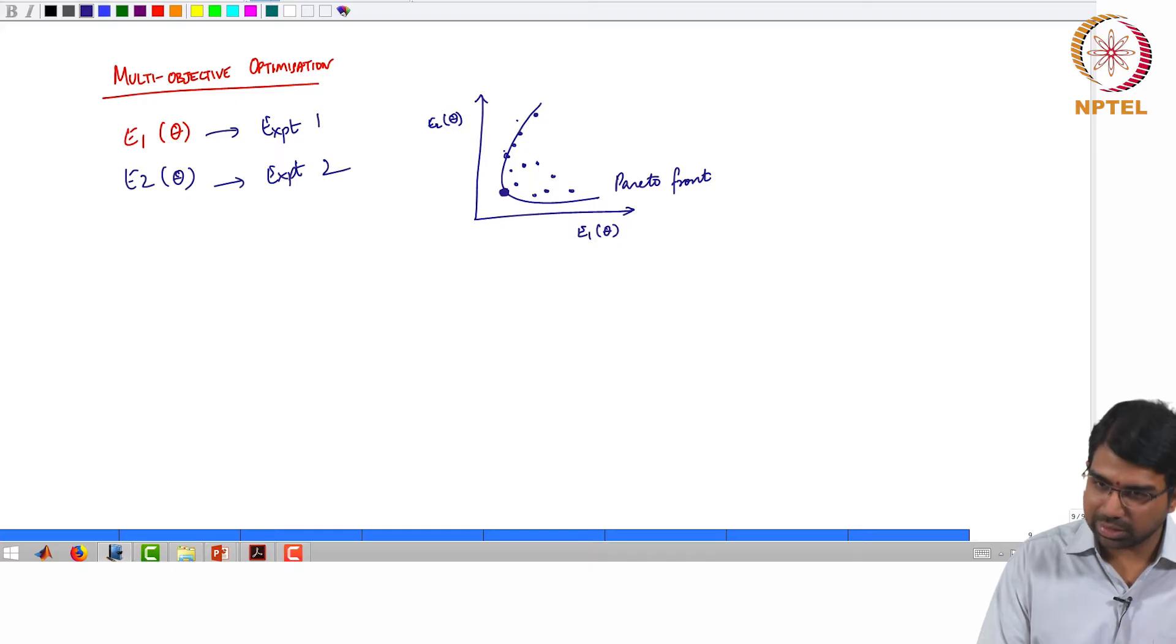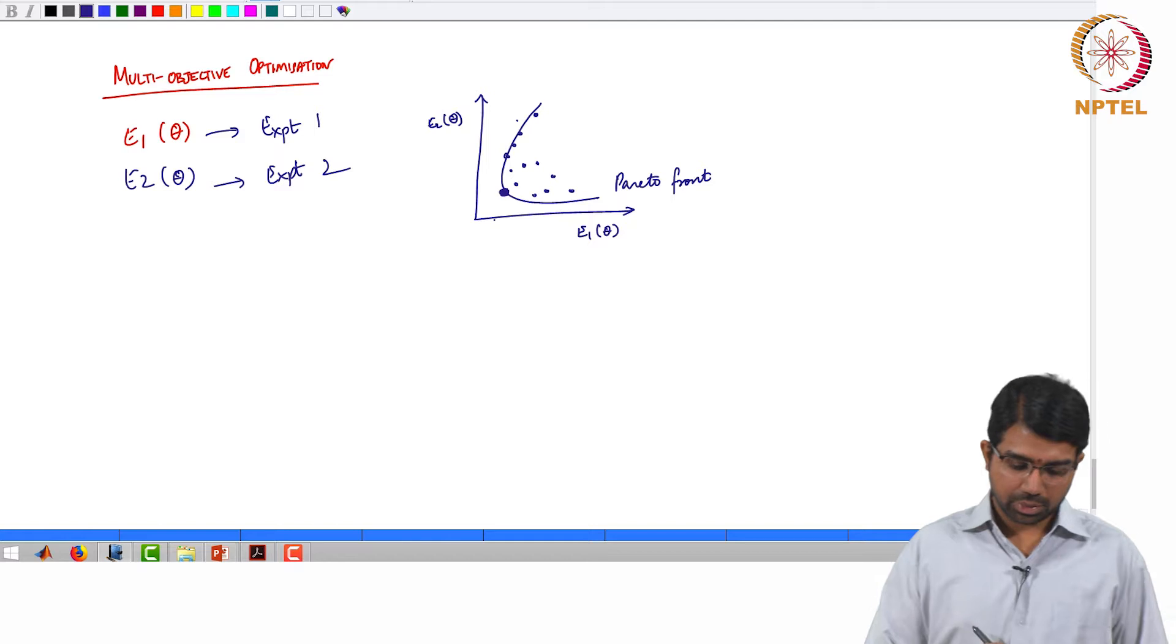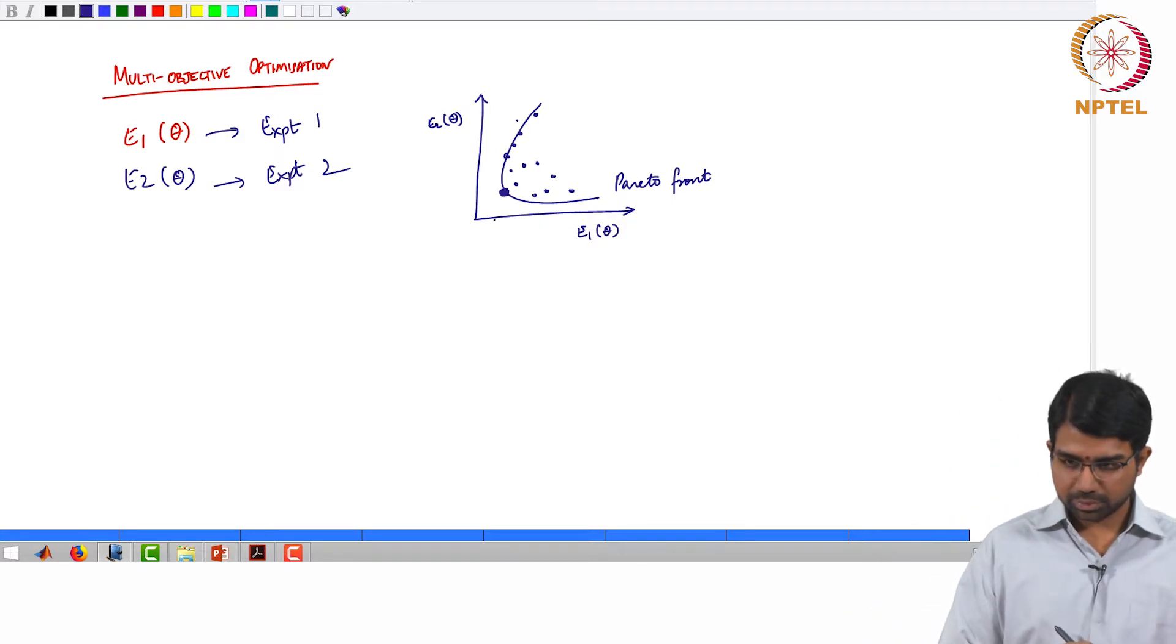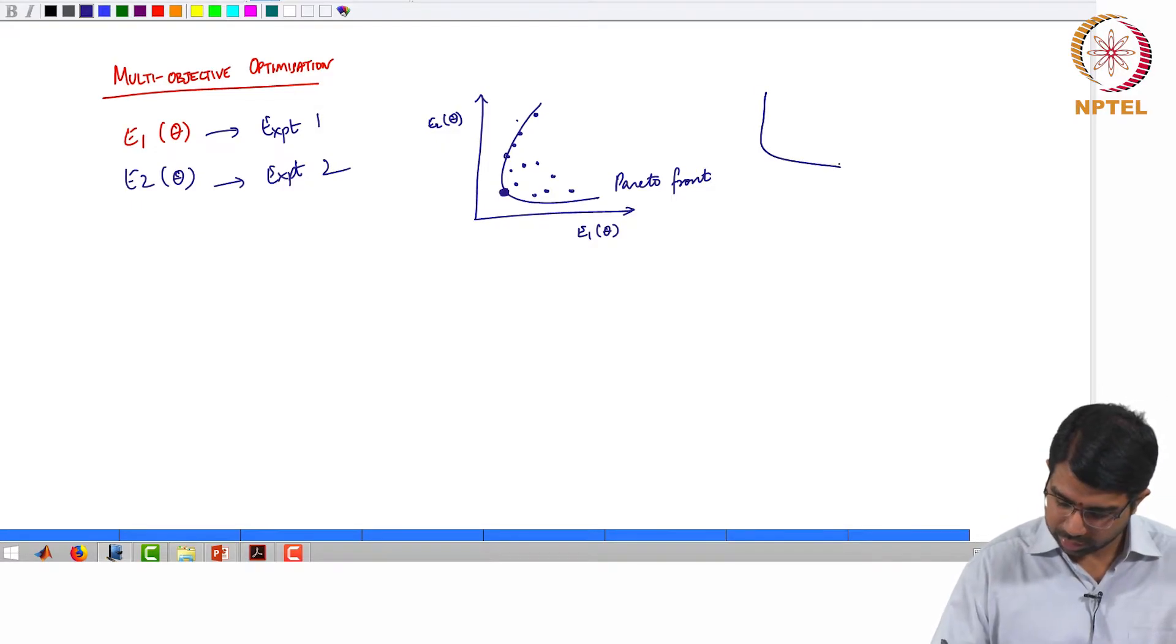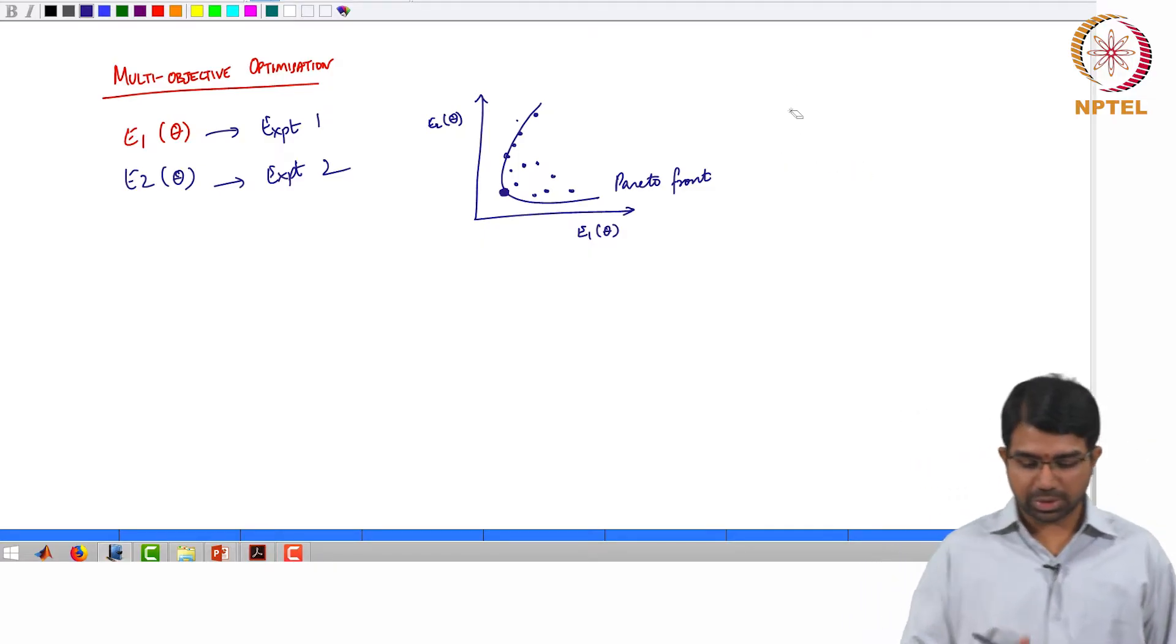So if you go in this direction you will increase E2, if you go in this direction you will increase E1, but at this point you have seemingly very good E1 and E2 values. Or you would have like the front that looks more like this. You can have different kinds of fronts basically.